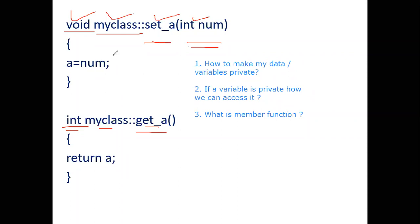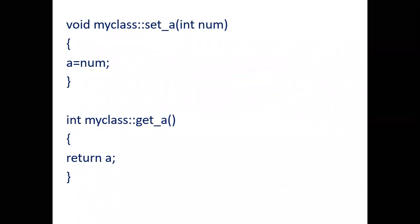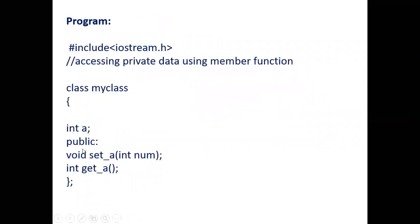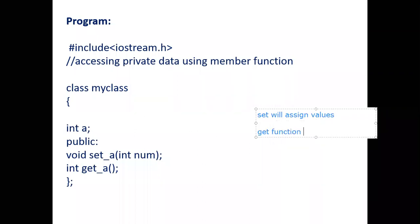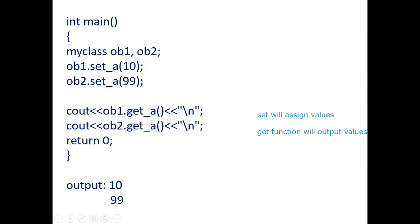Now, what do these functions do? The set function will assign or input values to variable 'a', and the get function will output values from 'a'. So set functions assign values and get functions output values. You can change the function names as you want, as long as you follow the naming rules.